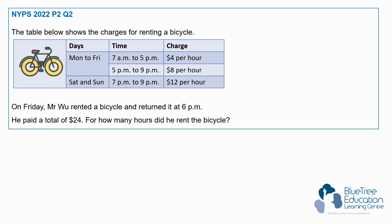How many hours did he rent the bicycle? The first thing to remember is that he returned it at 6pm. So from 5pm to 6pm, it is charged at the rate of $8 per hour. This is 1 hour.